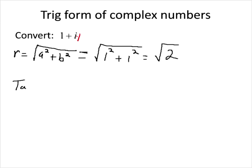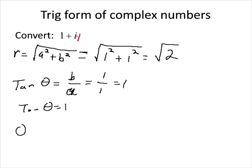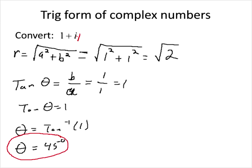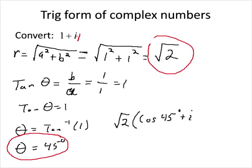Now I need to find the angle. The tangent of theta equals B over A, which is 1 over 1, or 1. So tangent theta equals 1, meaning theta equals the arctangent of 1. Looking at the unit circle, the arctangent of 1 is 45 degrees. So now I have both theta and R, and I can rewrite this in trig form: the square root of 2 times the cosine of 45 degrees plus i times the sine of 45 degrees.